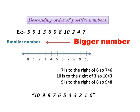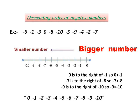Moving on to descending order of positive numbers. I have taken numbers from 0 to 10 and arranged them on a number line from bigger number to smaller number. As 1 is to the right of 0, 1 is bigger number. 2 is to the right of 1, so 2 is bigger number. Likewise any number to the right is bigger number. The order is: 10, 9, 8, 7, 6, 5, 4, 3, 2, 1, 0. As 10 is bigger number and 0 is smaller number among these numbers.